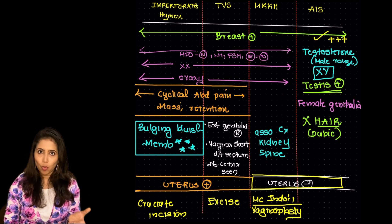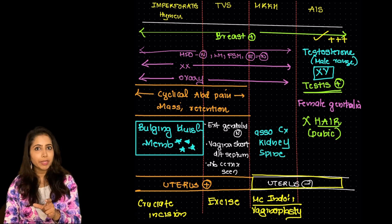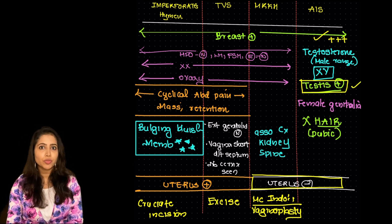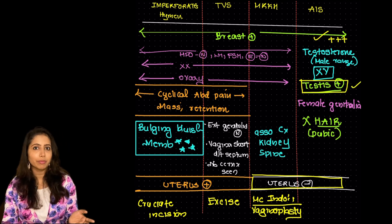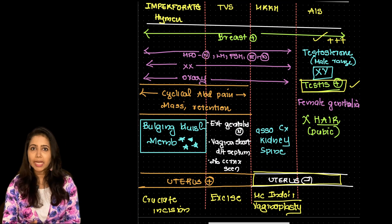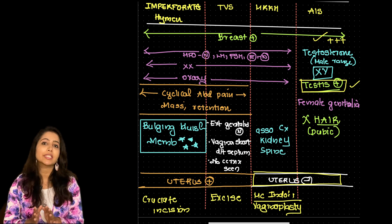As they are XY the Y chromosome will cause the development of testis. And this testis is going to produce the androgen as well as the AMH. And this AMH will inhibit the mullerian structures. So that's why there won't be any uterus in this.